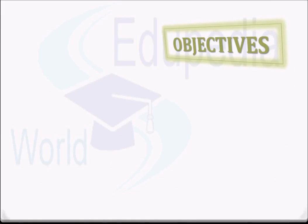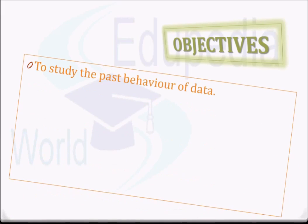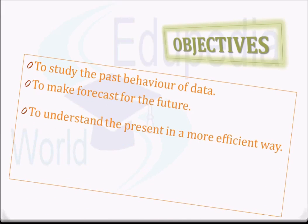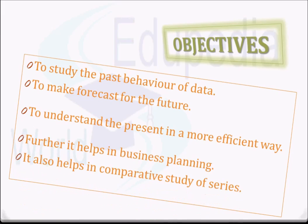The analysis of time series implies its decomposition into various factors that affect the value of its variable in a given period of time. The main objectives of time series study are: to study the past behavior of data and to make forecasts for the future. We can understand the present more efficiently by analyzing time series data, which helps in business planning and also in comparative study of two different series of data.